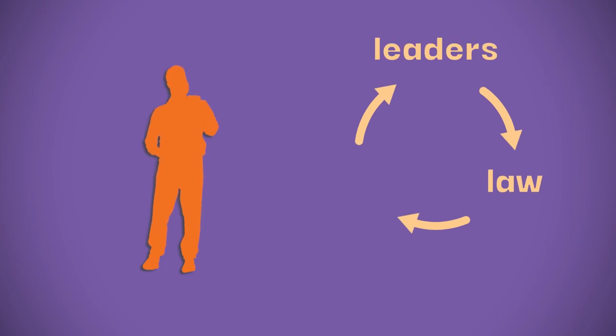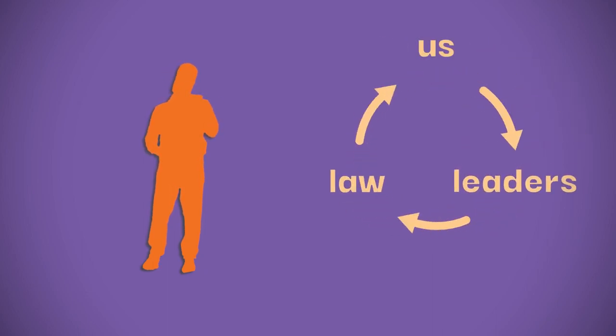The idea of democracy is that we follow the law, the law is written by our leaders, and the leaders are picked by us. We have this whole involved process for picking leaders that can take a year or more because it's pretty important that the person in charge got the people's approval.